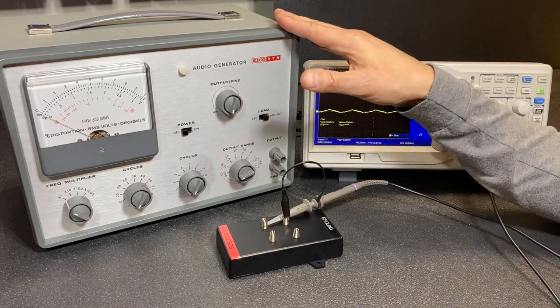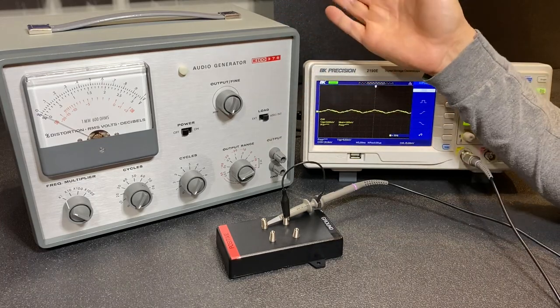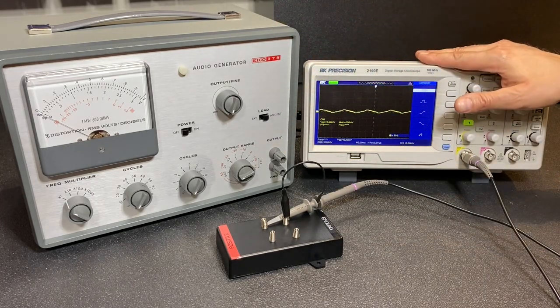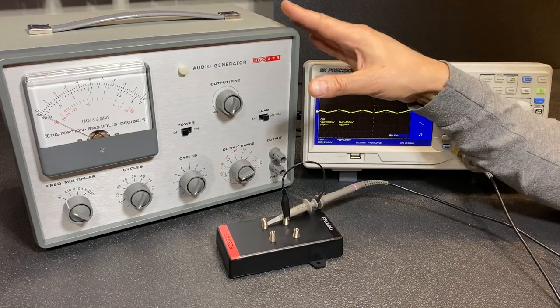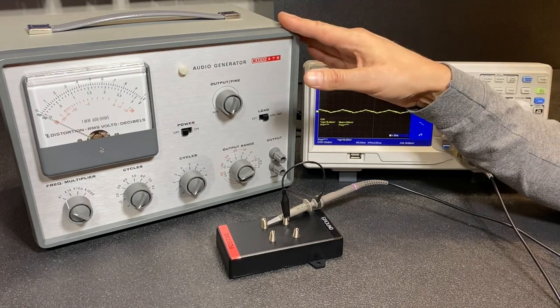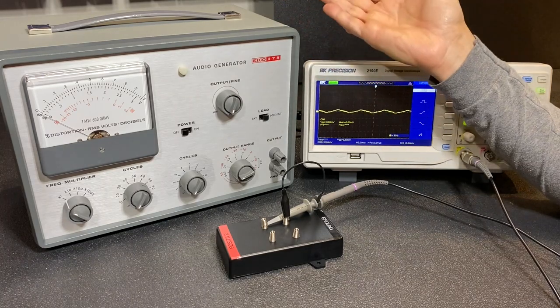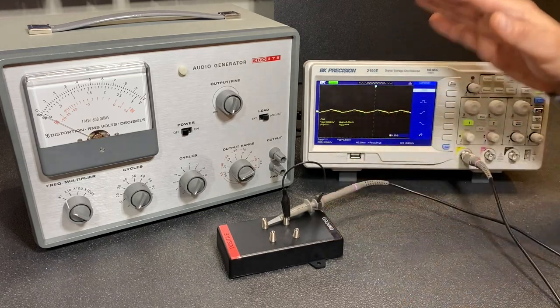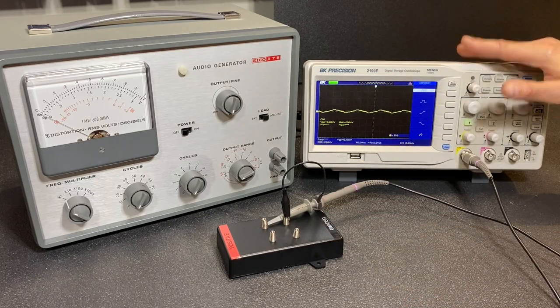Now you might be wondering why I have the audio generator set up here. You might think that I'm going to inject a signal into the capacitor and read the results on the oscilloscope. But actually I've positioned the audio generator here because it simply makes a lot of AC noise. And when placed in close proximity to our foil side tester, it creates a lot of noise at 60Hz which we can easily pick up on the oscilloscope.